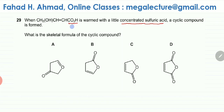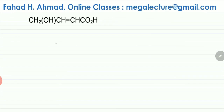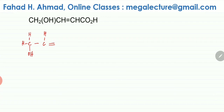The molecule has a carboxylic acid functional group and also an alcohol functional group. I'm going to draw the displayed formula of this molecule. The first carbon has two hydrogens — CH₂ — with an OH branch. The next carbon has one H with a double bond, then another CH, followed by the carboxylic acid functional group.